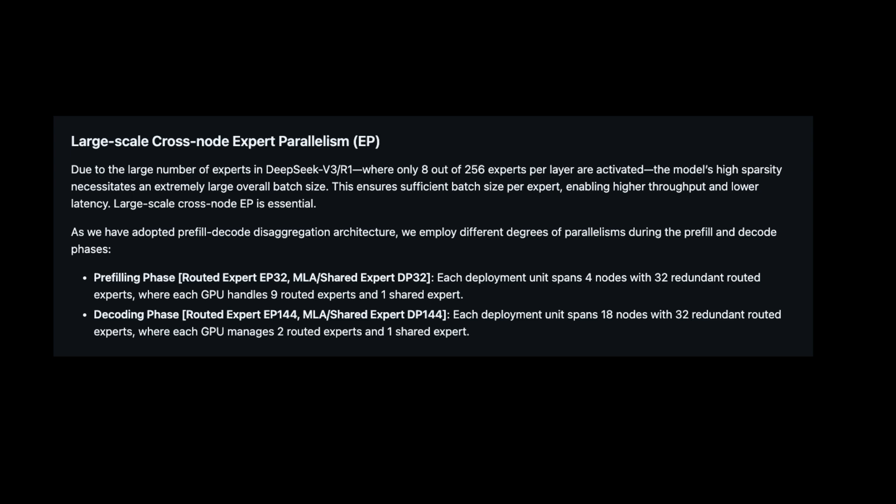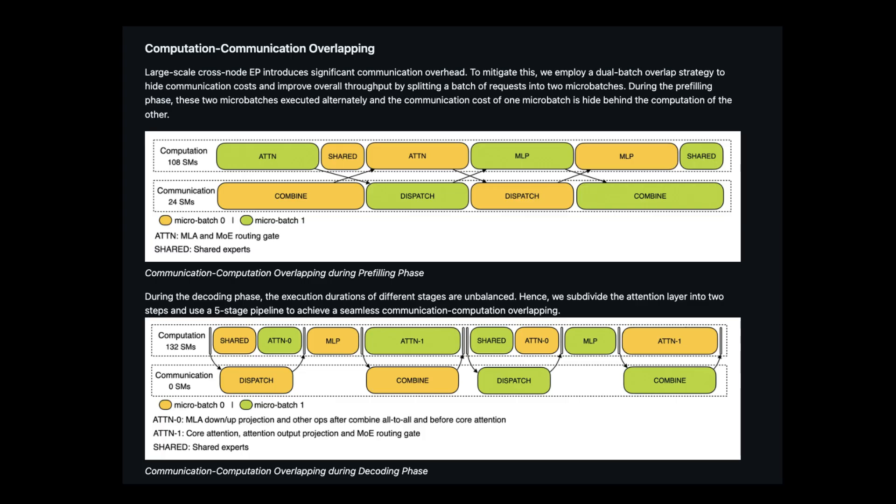This separation is very important because the two phases have different computational patterns and different parallelism needs. A major challenge in any cross-node setup is communication overhead — a hidden bottleneck. If each token representation has to hop across multiple nodes to find the right experts, you risk GPUs being idle while waiting for data.